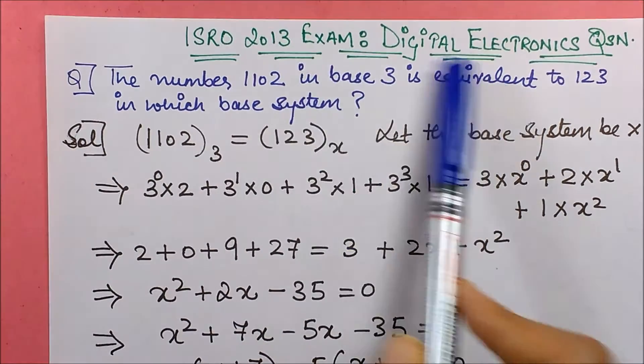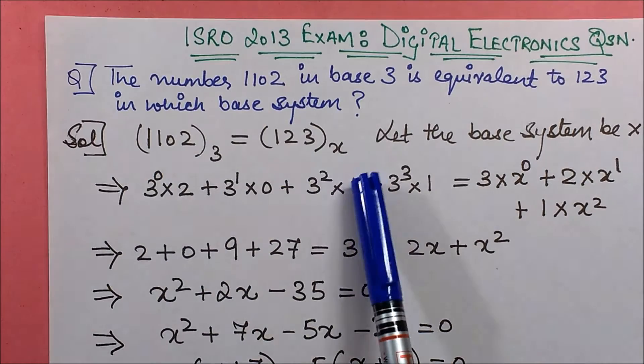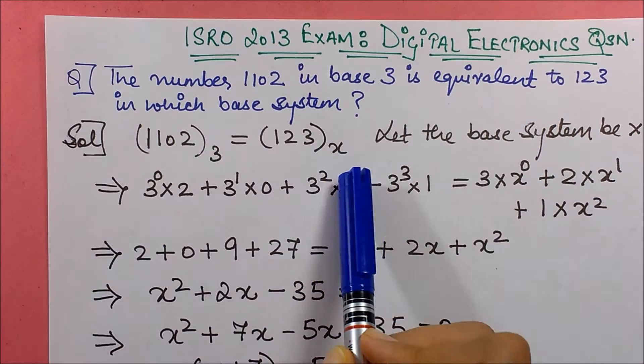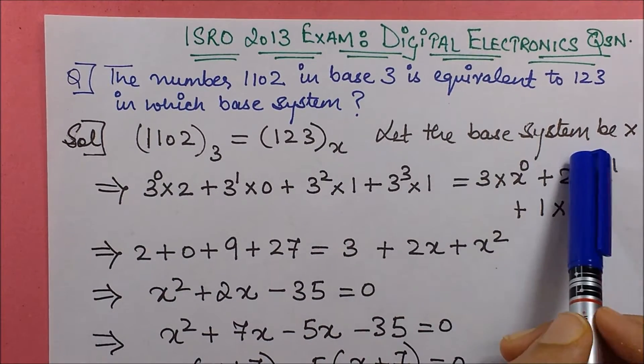We just need to frame out this question in the form of an equation. This is 1102 with base 3 is equivalent to 123 with base x. Let the unknown base be x.